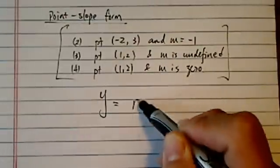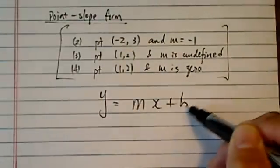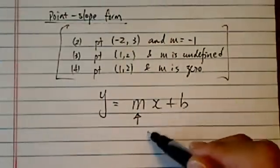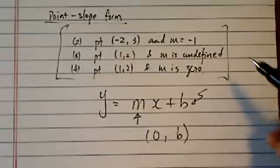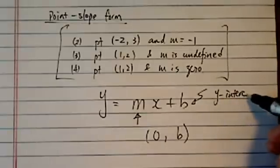To review, point-slope form is y = mx + b. Here's the slope m, and the point is when x is equal to zero, y is equal to b. For that reason, b is called the y-intercept.